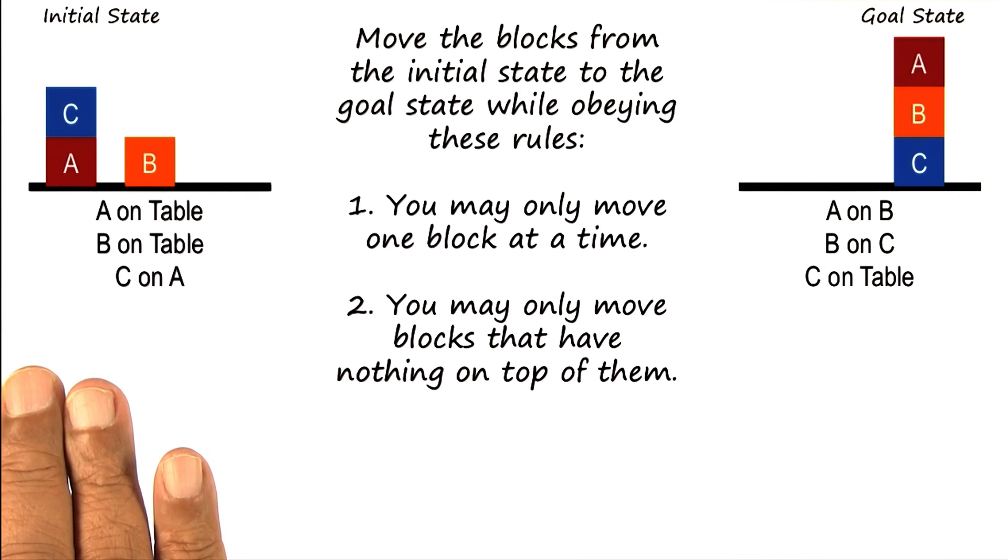You're given a table on which there are three blocks. A is on table, B is on table, and C is on A. This is the initial state.